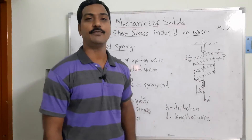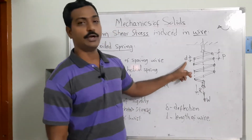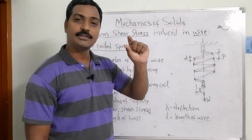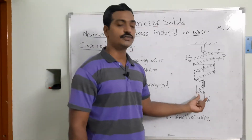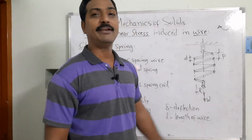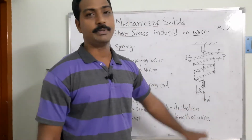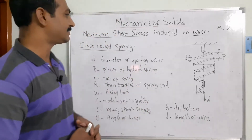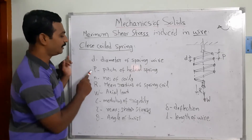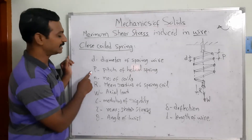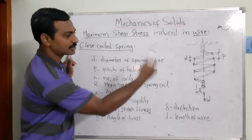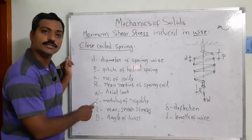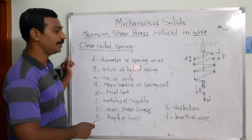Here is a skeleton view of the closed coil spring. The parameters are: small d is the diameter of the wire, p is the pitch (the distance between two coils), R is the mean radius of the spring, and W is the load acting on the system. Additional parameters in our mathematical derivation include: D is the diameter of the spring, n is the number of coils, C is the modulus of rigidity, τ is the maximum shear stress, and θ is the angle of twist.